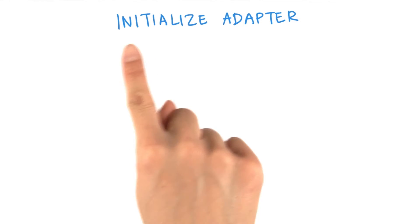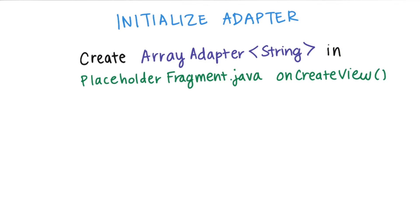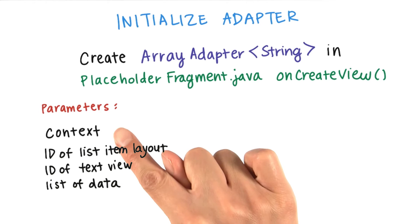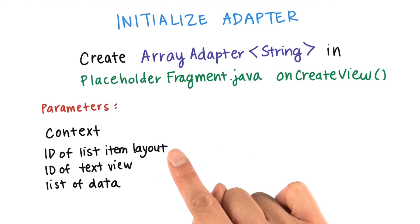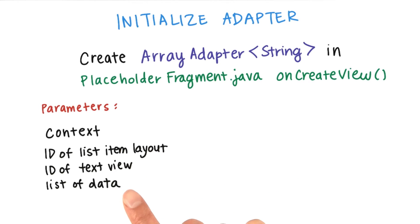In our code, we're going to initialize the adapter within the placeholder fragment's onCreateView method, because that's where we want the list view to be populated with data. We're using an array adapter, and we can initialize it with four parameters: a context, the ID of a list item layout, the ID of a text view within that list item layout, as well as the list of data. We'll go through each of these parameters one by one now.